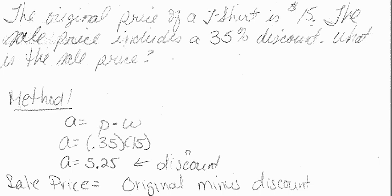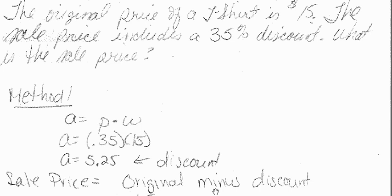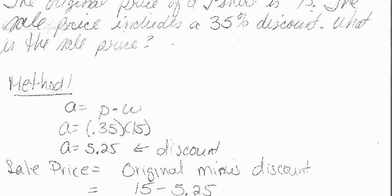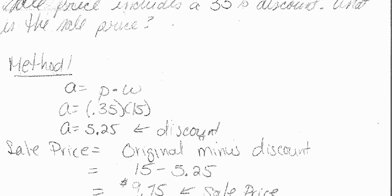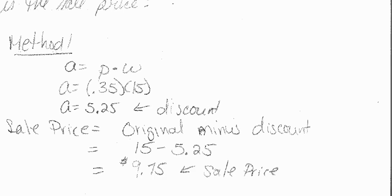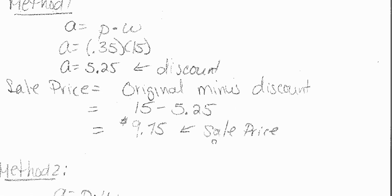So remember, our discount - our sale price is original minus discount. So the original cost is $15, minus $5.25, and we get $9.75 as the sale price. So that's method one.